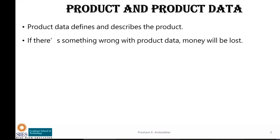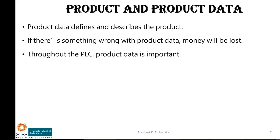Product data is really important and understanding the data is also important. It is not important only from a manufacturing point of view — it is important throughout the lifecycle of the product. Take the example of franchises like McDonald's or KFC: they provide information to each franchisee specifying how long to bake, what processes to follow, the temperature, and all the fixed ingredients.